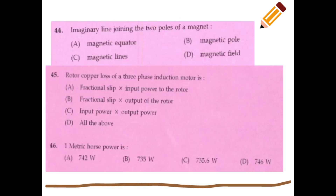Moving on to the transformer section: an imaginary line joining the two poles of a magnet is called the magnetic axis; the line joining equal magnetic potentials is the magnetic equator.